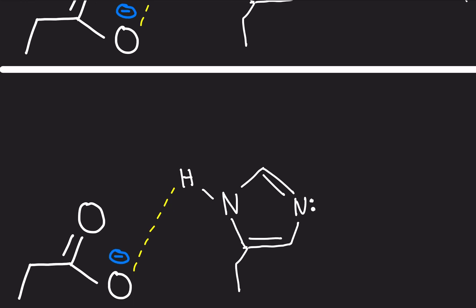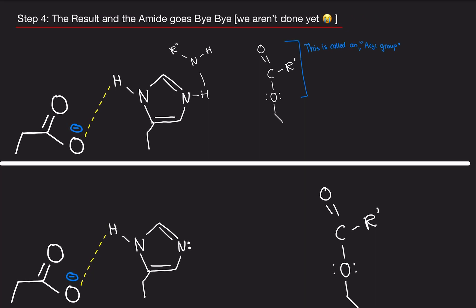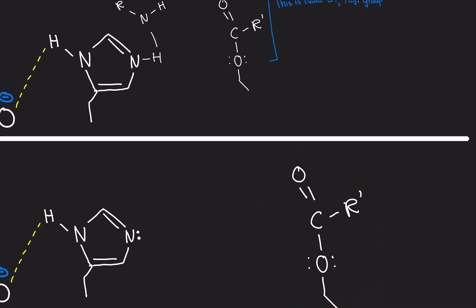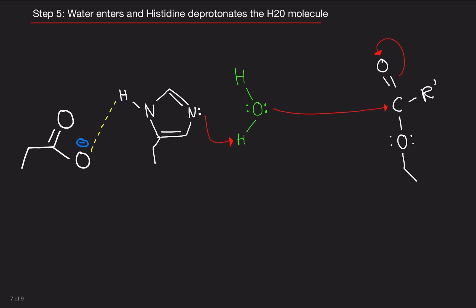So the molecule on the left here, we have our aspartate group and our histidine. And here we have an acyl group that we formed. So that's where we left off. So now we're here.